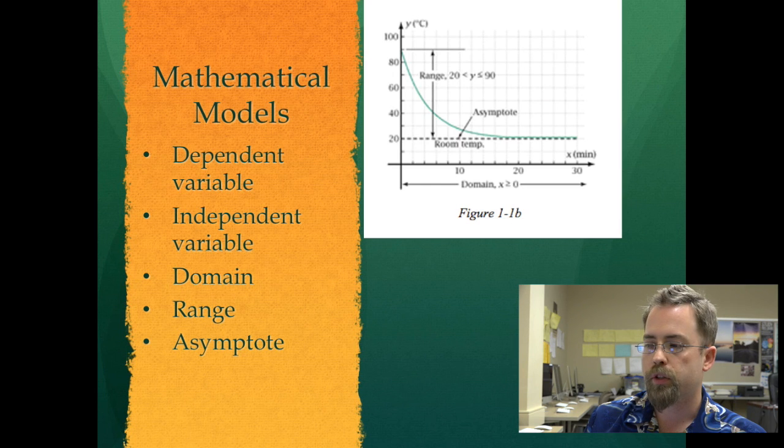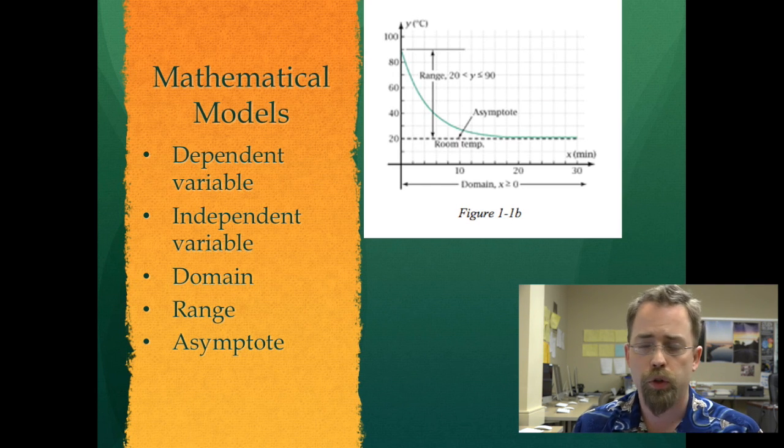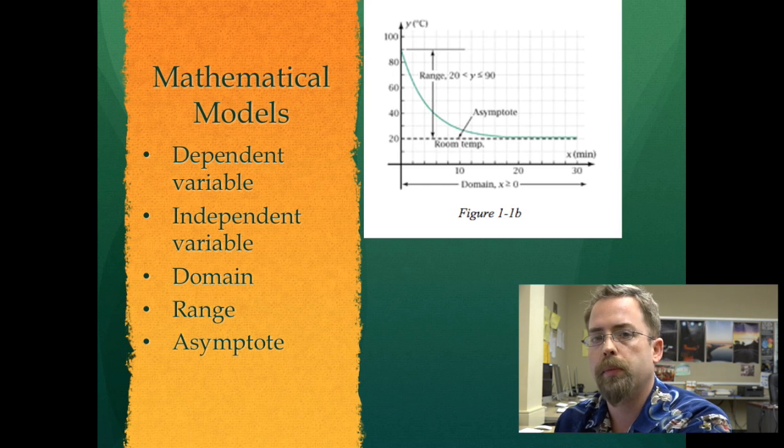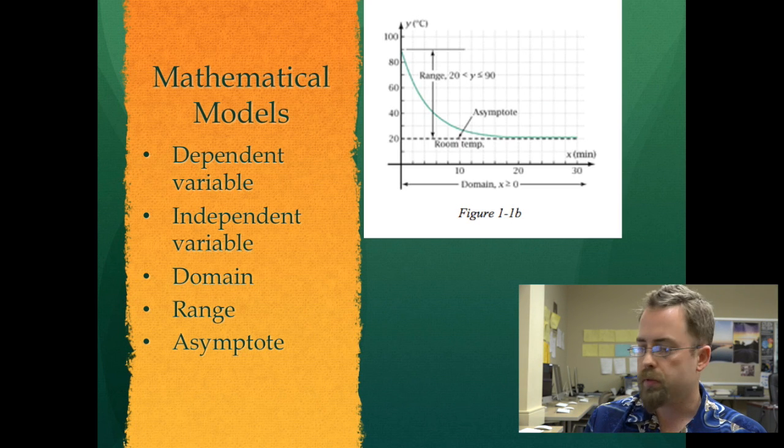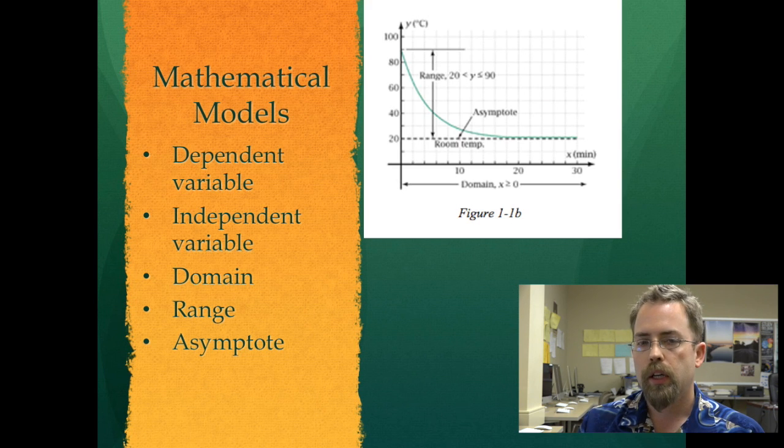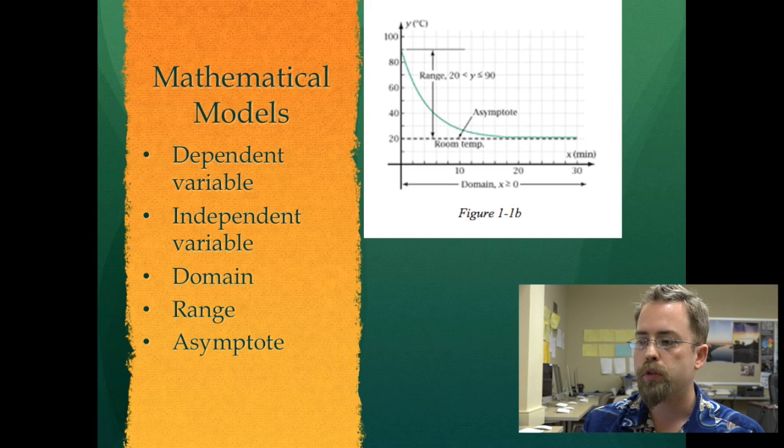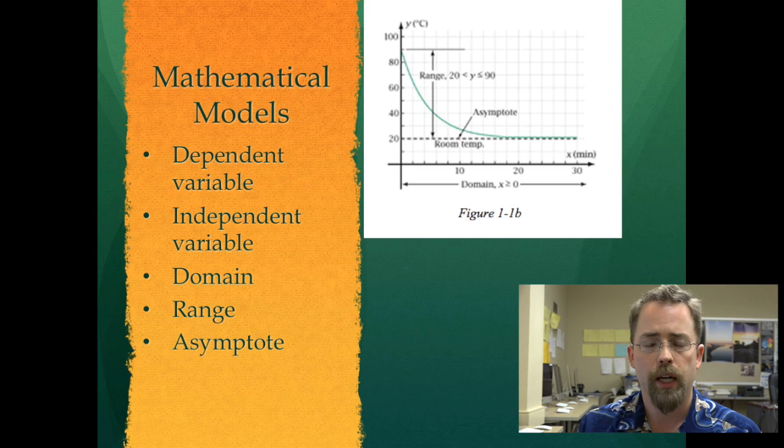Last vocab word here that you might look at is asymptote. You're not responsible yet. We'll probably have to save that for chapter 15. But a rigorous definition of an asymptote is coming later. For now, you just need to recognize that you've seen these before. These are lines that we approach but never actually reach.